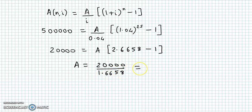So if we perform division, 20,000 divided by 1.6658, this is 12,006, so approximately 12,006.24.